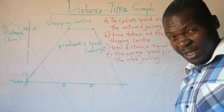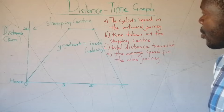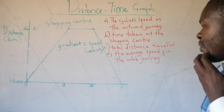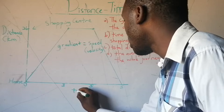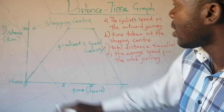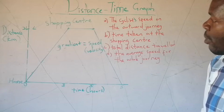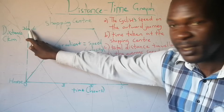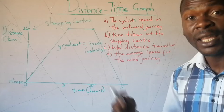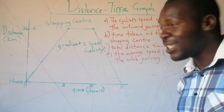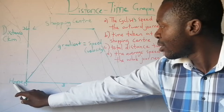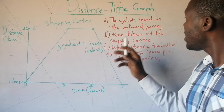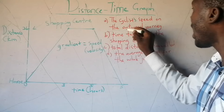Just like what we did in terms of a displacement-time graph. Now to attempt the first question, we are given time in hours on the horizontal axis and distance in kilometers on the vertical axis. The distance from home to the shopping center is 36 kilometers, and the distance from the shopping center back home is also 36 kilometers.